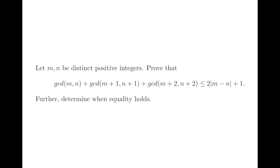We are given two distinct positive integers m and n, and the statement is to prove that the following sum of GCDs — the greatest common divisors between m and n and other terms — is smaller than two times the difference between m and n plus 1. Furthermore, we are asked to determine when equality holds.